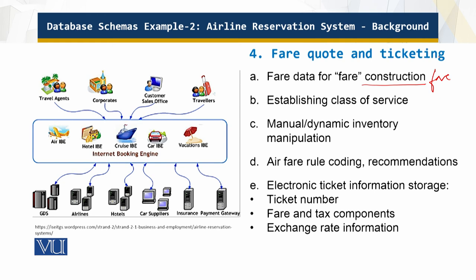These rules are tailored differently between different city pairs or zones — from A to B can be different from A to C, and so on. Inventory control can be used to manipulate availability, with fare coding recommendations and various other functions applied.